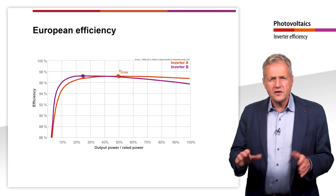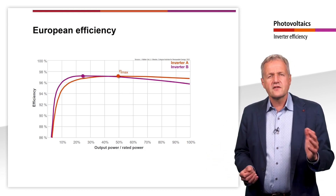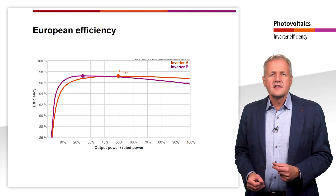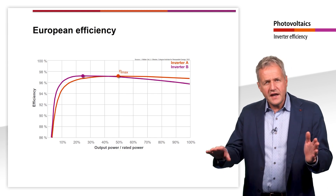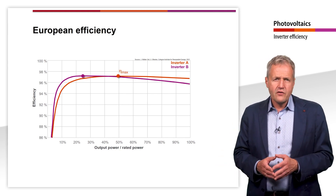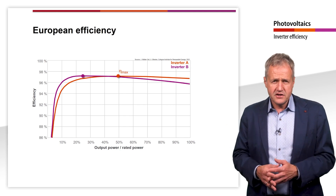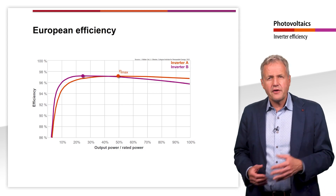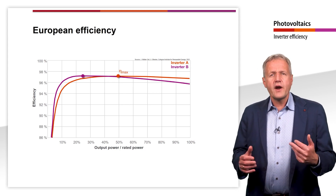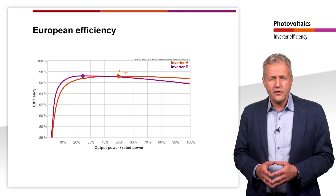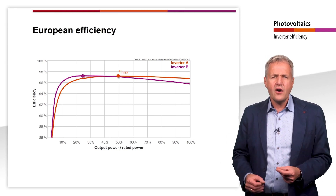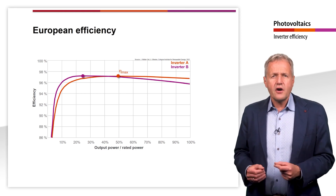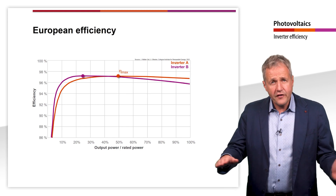After all, the instantaneous power of the inverter depends on the power that is currently being supplied by the PV generator. However, the PV power varies throughout the day and the year. So the inverter will only operate at its peak efficiency for a small portion of the time. The vast majority of the time, it will be somewhere else on the efficiency curve.